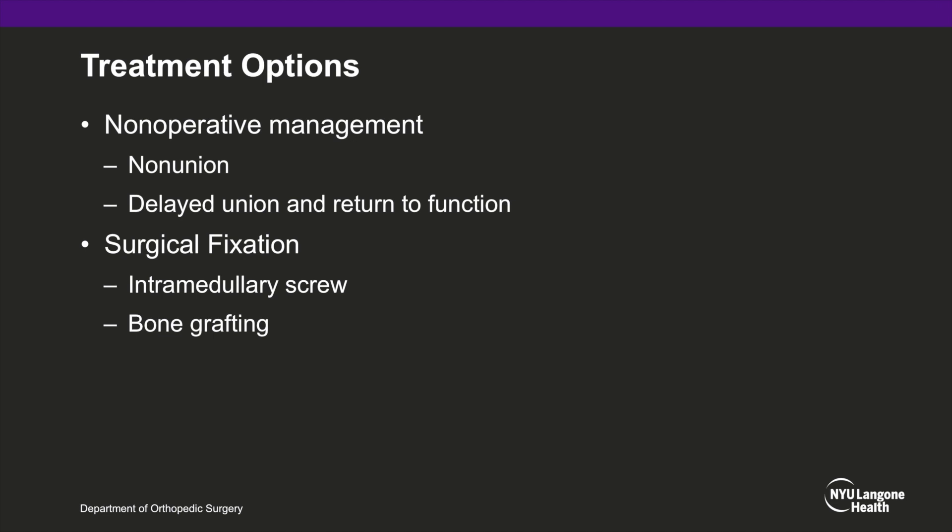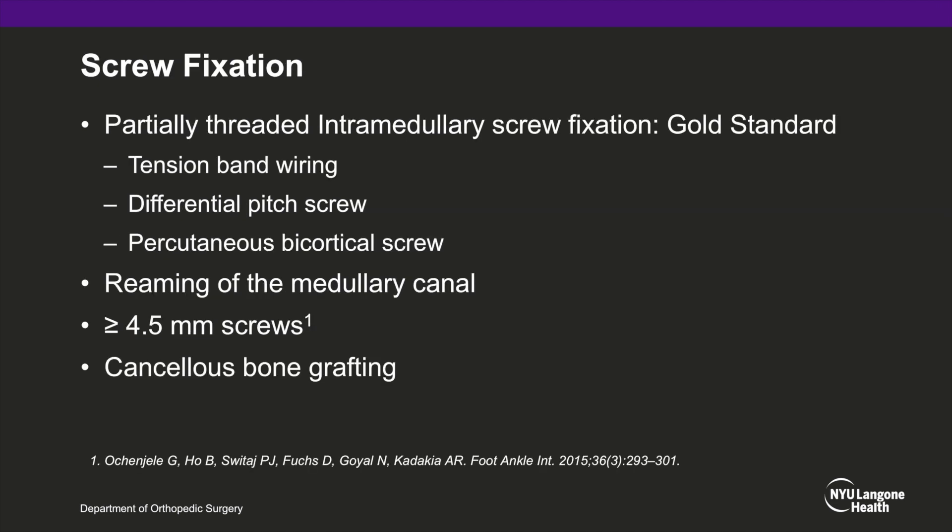Intramedullary screw fixation is the standard of care, and bone grafting may be used in cases of nonunion. Although techniques such as tension band wiring and percutaneous lag screws have been described, partially threaded intramedullary screw fixation remains the gold standard. Typically, the canal is reamed to allow the largest screw diameter and a tight endosteal fit. The literature supports that a minimum screw size of 4.5 mm is necessary for adequate purchase. In cases of delayed union or nonunion, cancellous autograft or allograft may be used.